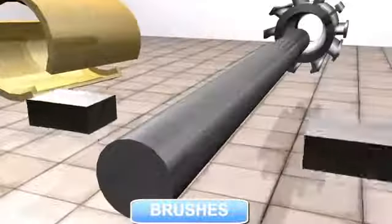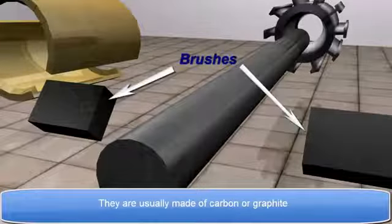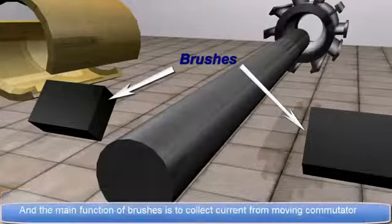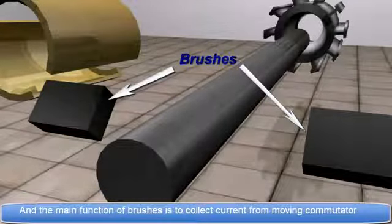Brushes. They are usually made up of carbon or graphite. And the main function of brushes is to collect current from moving commutator.